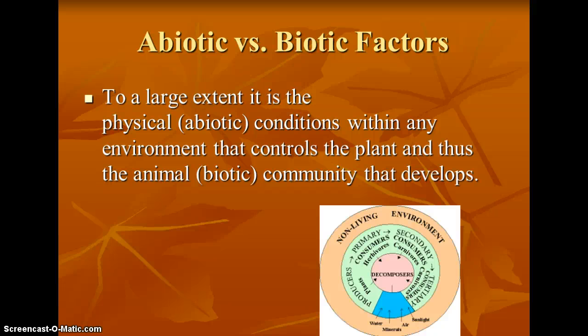We've talked about the terms biotic and abiotic — biotic being living and abiotic non-living. When we talk about factors in an ecosystem, abiotic factors are the physical conditions that can control a plant or animal, which are the biotic community. What we're going to look at in this module are what some of those abiotic conditions are and how we can measure them in an ecosystem.